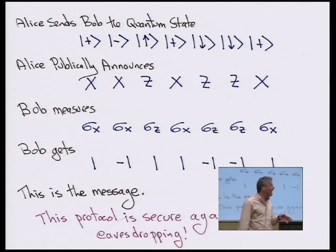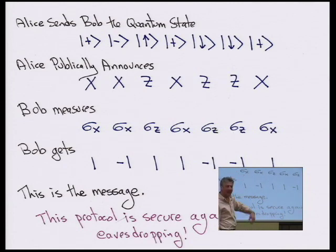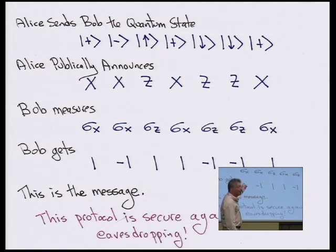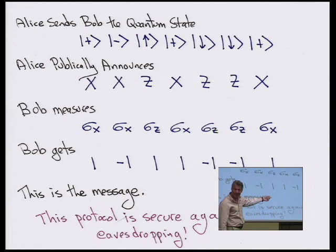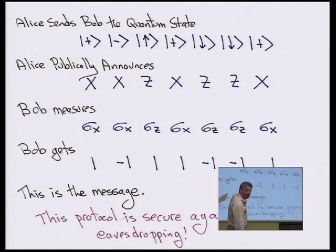Alice wants to send Bob a secure message. Alice sends the quantum states: plus, minus, up, plus, down, down, plus. Alice then publicly announces the measurement bases: x, x, z, x, z, z, x. Bob measures sigma_x, sigma_x, sigma_z, sigma_x, sigma_z, sigma_z, sigma_x. Since these are eigenstates of those operators, the outcomes are: 1, -1, 1, 1, 1, 1, -1 — that sequence is the message.